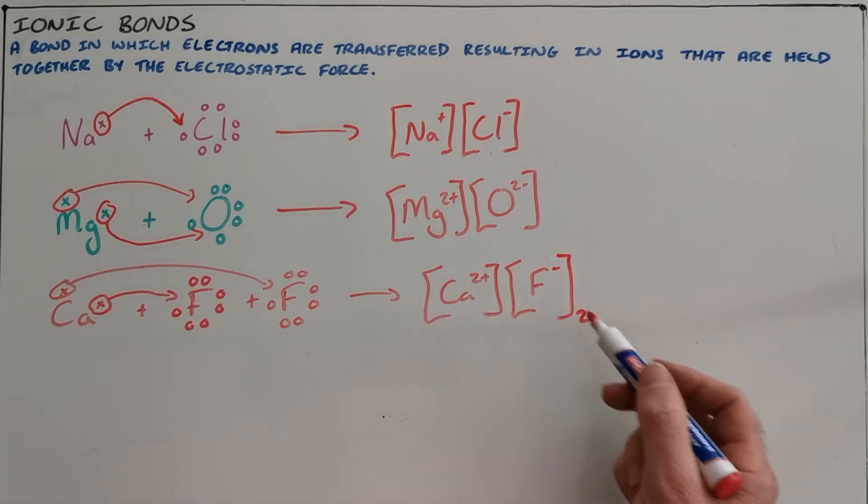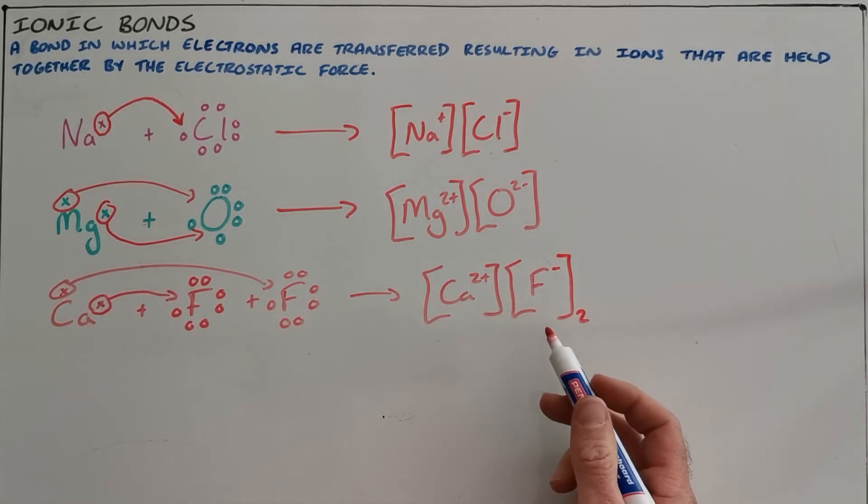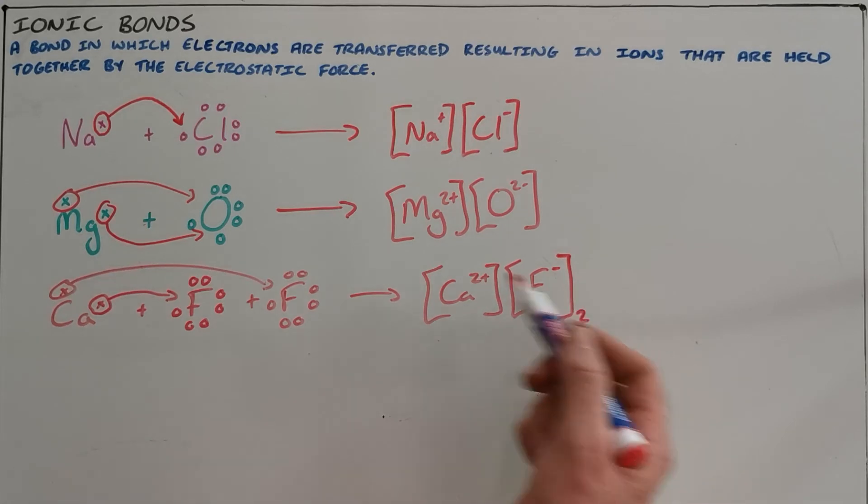We form two separate fluorine ions that both have a charge of minus one. As a result, the net charge is zero and we can still see that there haven't been any gained or lost electrons.